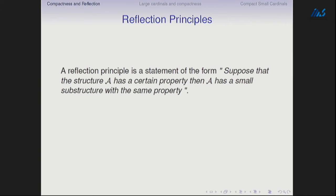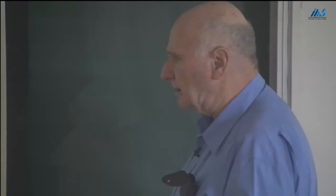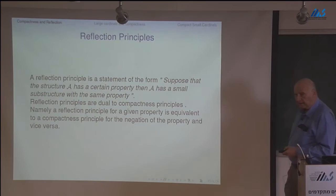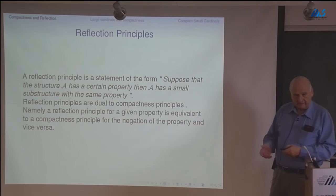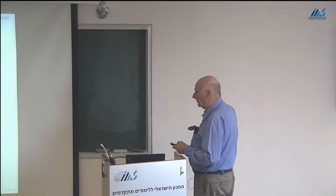A dual thing to compactness is the reflection principle, something which is dual to compactness. A reflection principle has the form: suppose a structure has a certain property, then there exists a small substructure having the property. A reflection principle for a given property is equivalent to a compactness principle for the negation of the property, and vice versa. We'll talk mostly in terms of compactness, but for some principles it is more convenient to talk about the reflection version.